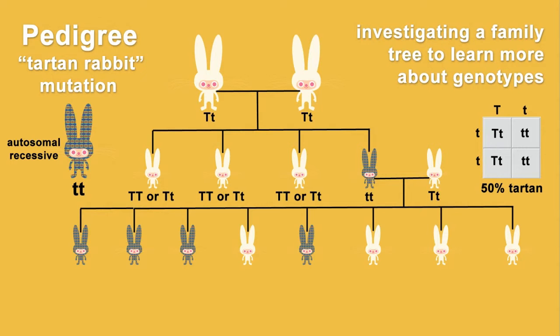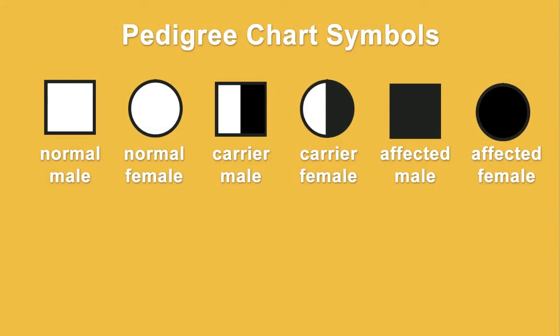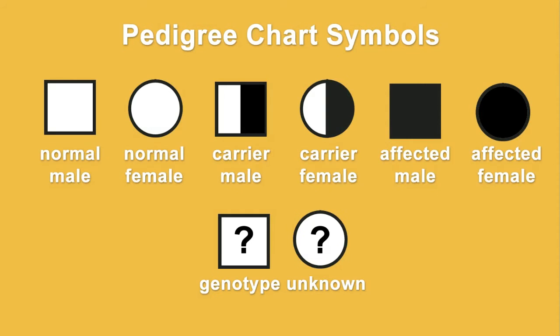It also tells us that the non-tartan babies must be heterozygous. Now, if we want to do a lot of pedigree charts, it's not really practical to draw rabbits or other creatures, so instead we use easy-to-draw symbols. Typically, this is done using squares and circles to represent males and females, white or black to show normal or affected, and half-and-half when we are sure the genotype is heterozygous. Remember that when someone is heterozygous for a genetic disease, they are called a carrier. You can also add question marks to your symbols when you are not sure if they are normal or a carrier.